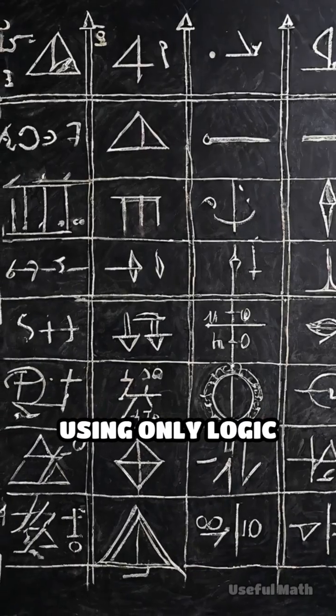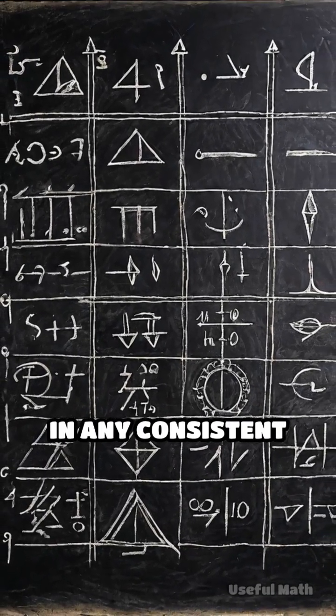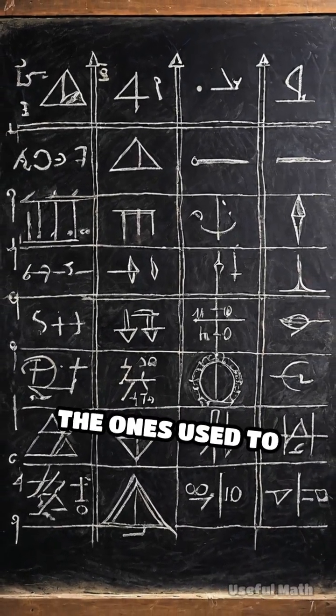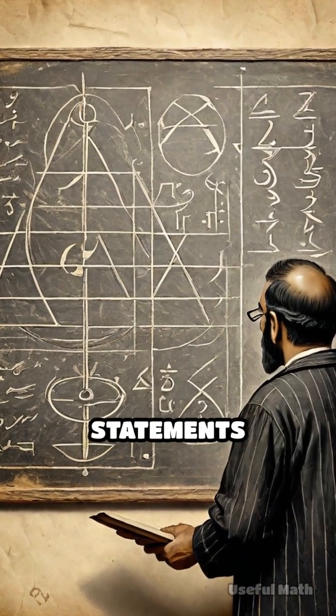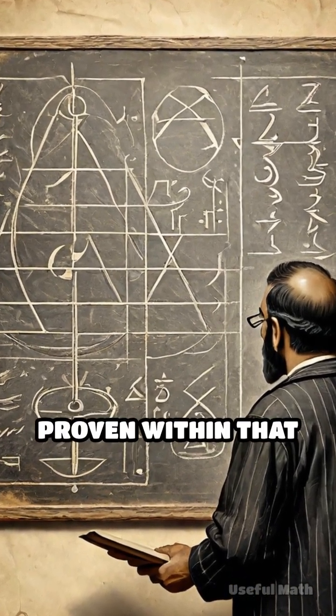Using only logic and symbols, Gödel showed that in any consistent system of mathematics, like the ones used to build all of modern science, there will always be true statements that cannot be proven within that system.